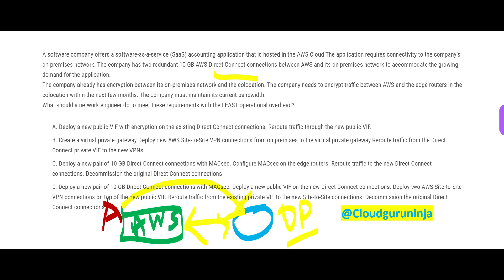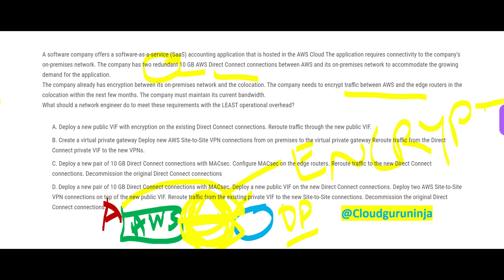The company already has encryption between its on-premises network, but they want to encrypt traffic between AWS and the outer network — this traffic path should be encrypted. That is the requirement. When doing the encryption, it should not have any adverse impact on network bandwidth performance. The network bandwidth should stay unaltered, and the solution should have low operational overhead.